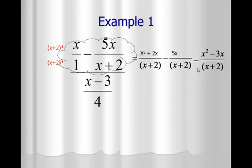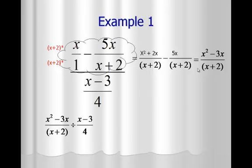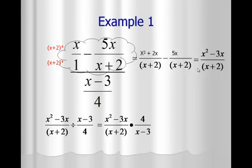Now we take the cloud portion of the problem and divide it by the other fraction, x minus 3 over 4. So x squared minus 3x over x plus 2 is being divided by x minus 3 over 4. When we divide fractions we copy down the first fraction, change division to multiplication, and flip the second fraction — so 4 comes on top and x minus 3 goes on bottom. Then we factor and cancel any common factors.